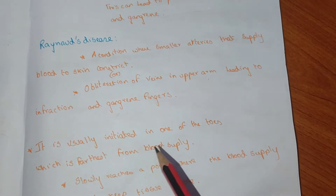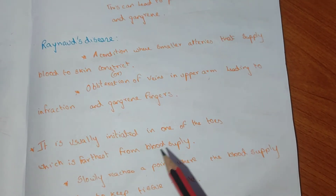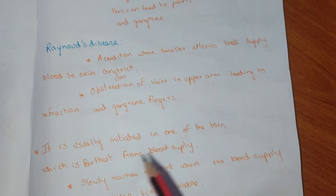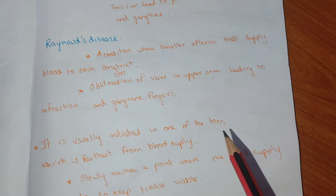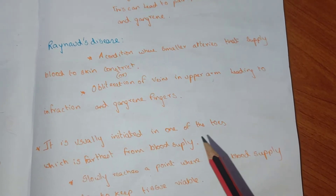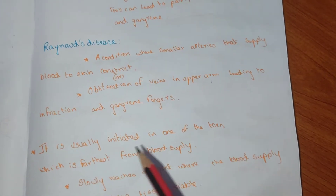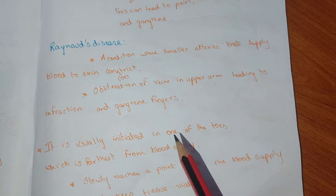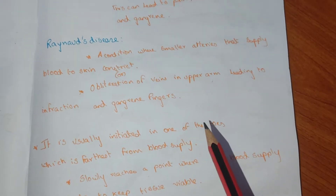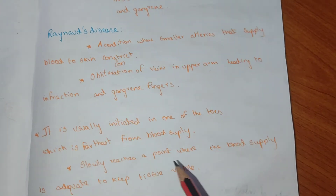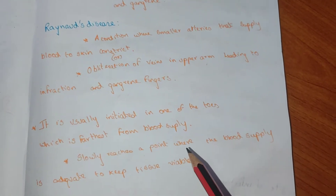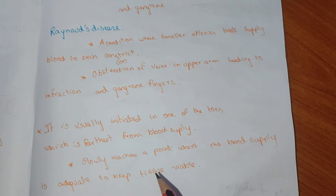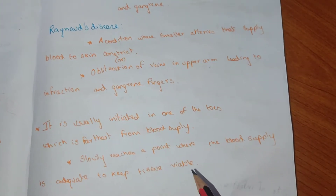Dry gangrene usually initiates in one of the toes farthest from the blood supply. The gangrene formation takes place slowly, reaching the point where blood supply is adequate to keep the tissue viable.